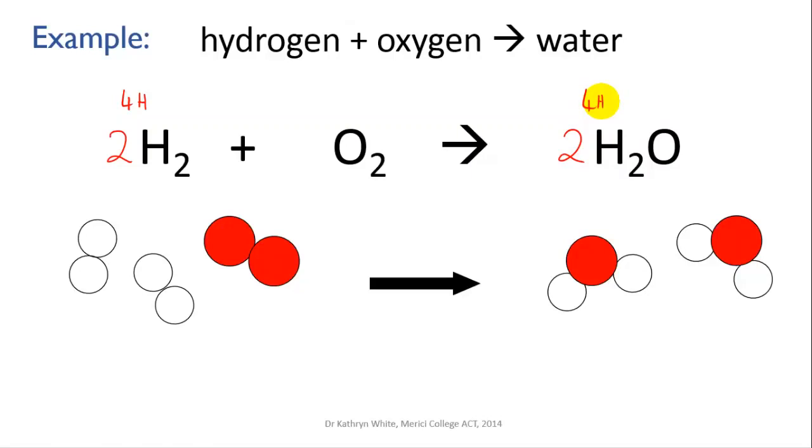For oxygens, on the left we have one oxygen molecule, and that molecule is made up of two oxygen atoms, so that's two O's. And on the right, each water molecule has a single oxygen atom, and there are two water molecules, so that's two oxygens. So our oxygens are also balanced.